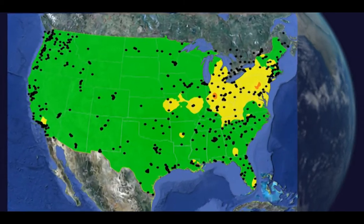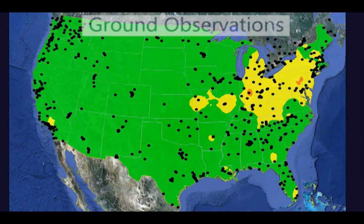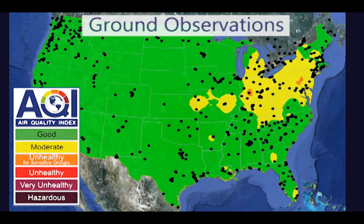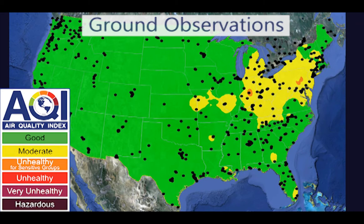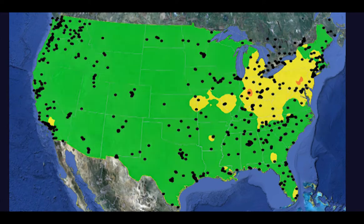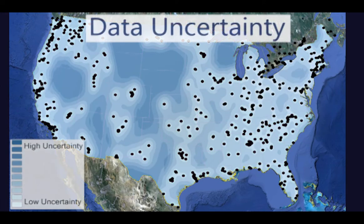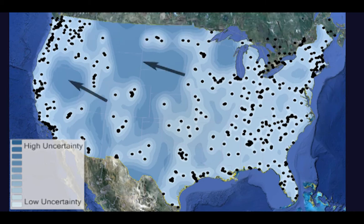This is an example map of particle pollution concentrations based on ground observations only, color-coded according to the Air Quality Index, or AQI. The locations of ground monitors are shown with black dots. This is a map of the uncertainty of the ground observations. It becomes apparent that as you move farther from a monitor location, the uncertainty increases.